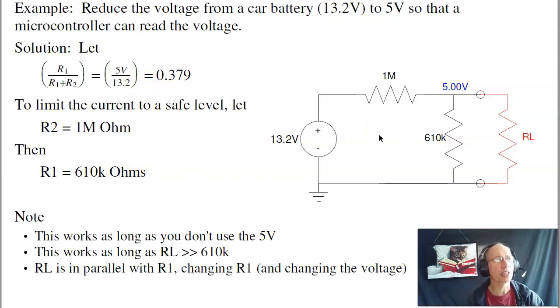That's one use of voltage dividers. I can reduce the voltage. A thing to note about this, though, is this is a voltage divider that works as long as you don't use it. If I connect this to a load, then essentially I've added a resistor in parallel with the 610k, change that resistance, and I change the voltage. So this is a way to convert 13.2 volts down to 5 volts, providing you don't use it, or in other words, RL is much, much larger than 610k.